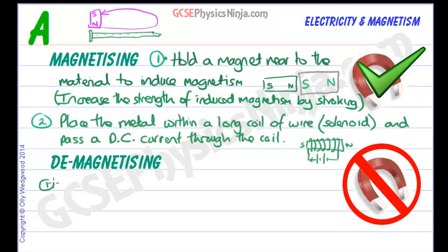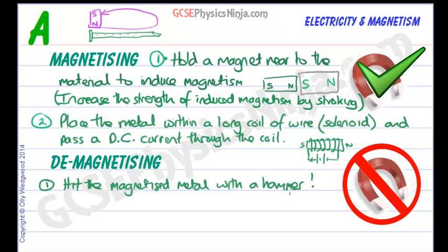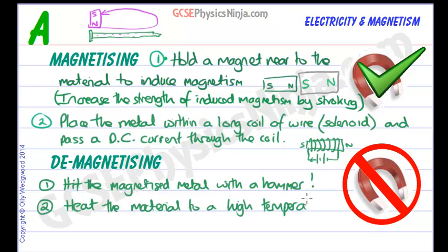To demagnetize a material, we need to scramble up all of the domains. The first way is to hit the magnetized metal with a hammer. The shock wave passes through the material and tends to scramble up the domains again — you may have to hit it several times to reduce its magnetism. The second way is to heat the material to a high temperature, which makes the atoms vibrate faster with bigger amplitudes, and that also scrambles the domains.